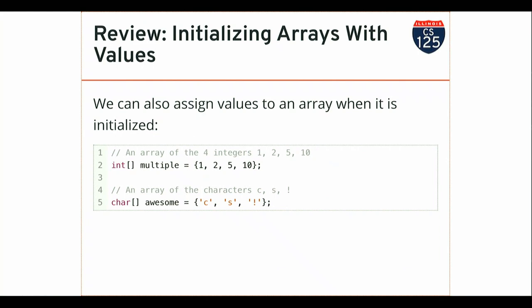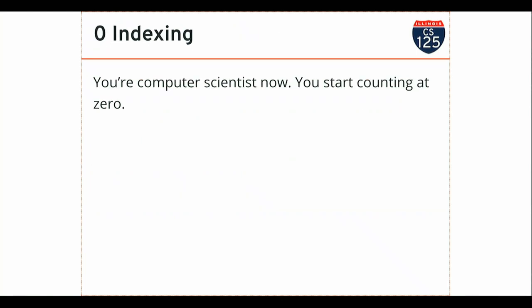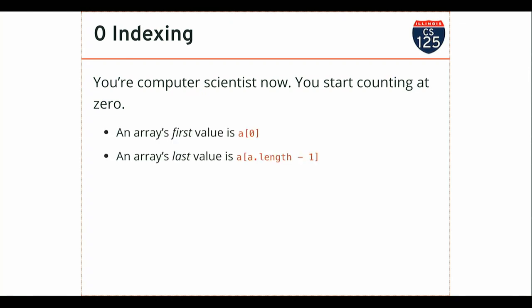I can also initialize arrays when I declare them. In an array, you can have an initial assignment on the right side of a declaration. This is declaring and initializing an array called 'multiple'. It stores four values — 1, 2, 5, and 10 — where the indices associated with those are 0, 1, 2, and 3. Zero indexing: the first value is index zero, the second value is index one, the 82nd value is index 81. That also means the last value in the array is its length minus one — A dot length minus one is the last valid index.